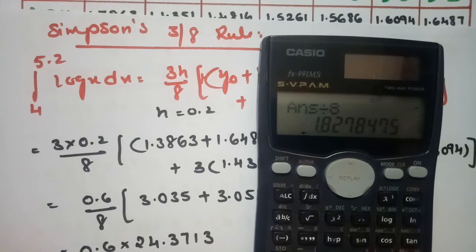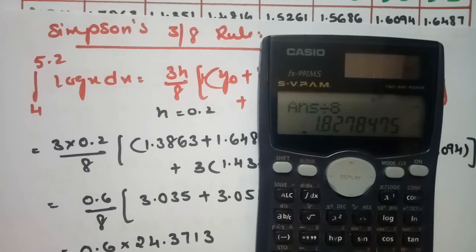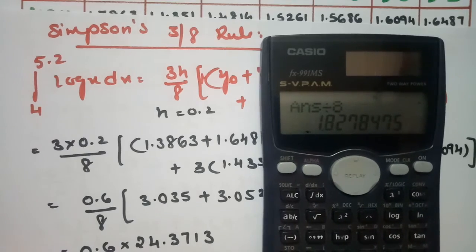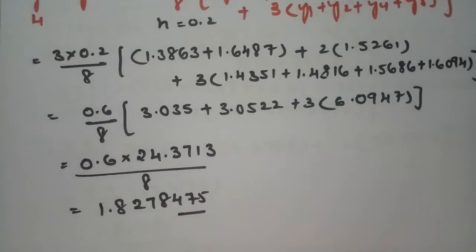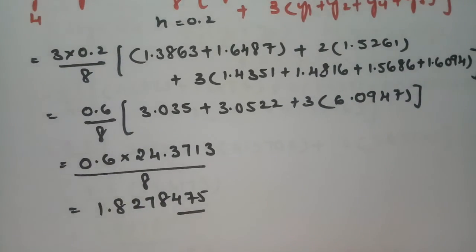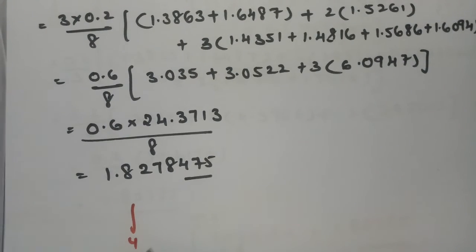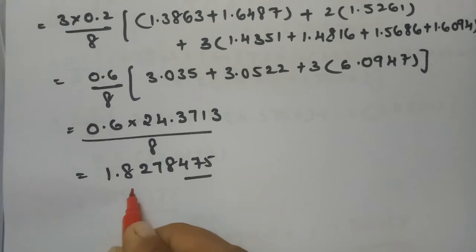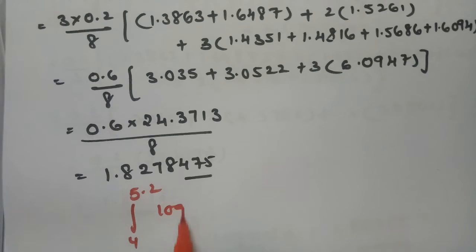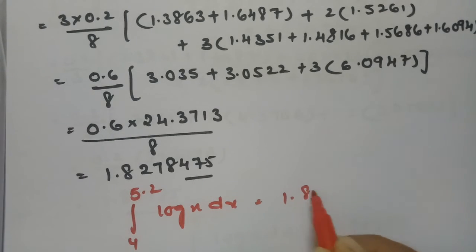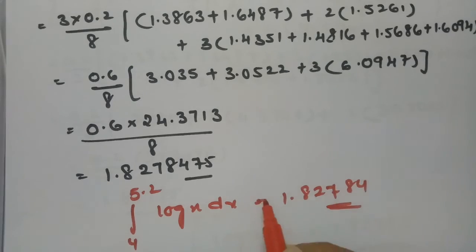The value here is 1.8278475. Therefore the integral from 4 to 5.2 of log x dx equals 1.8278 according to Simpson's 3/8th rule.